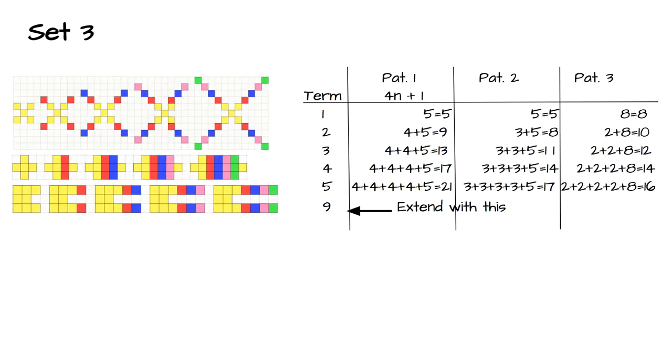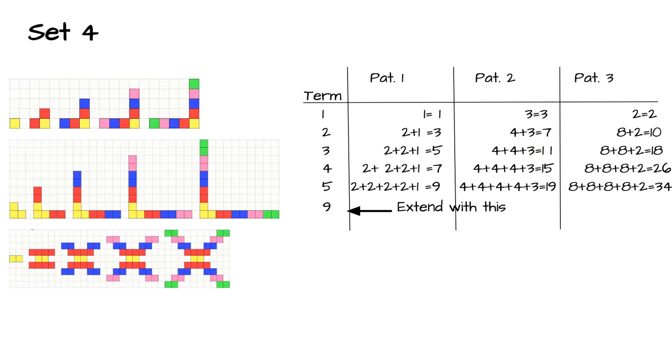For set three, 4n plus 1, 3n plus 2, and 2n plus 6. And set four, 2n minus 1, 4n minus 1, and 8n minus 6.